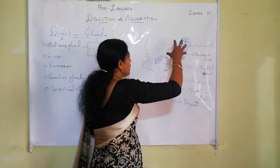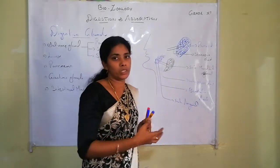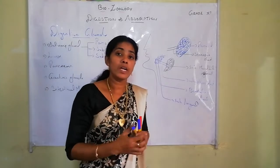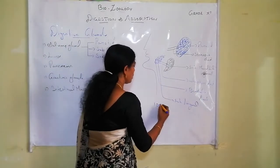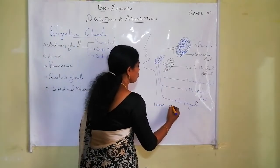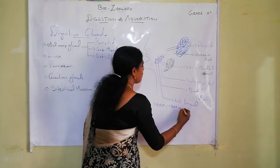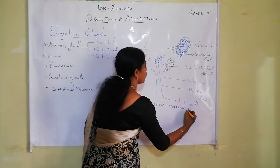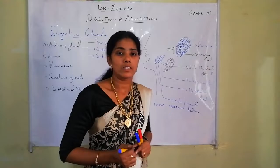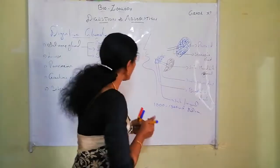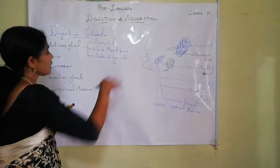The secretions from all three salivary glands are released into the buccal cavity for digestion. Overall, the salivary glands secrete 1000 to 1500 ml of saliva per day.